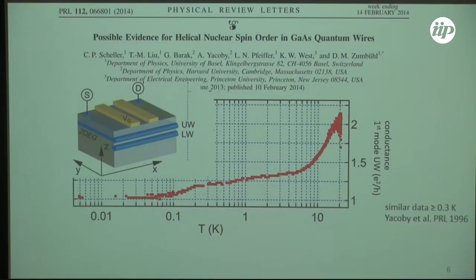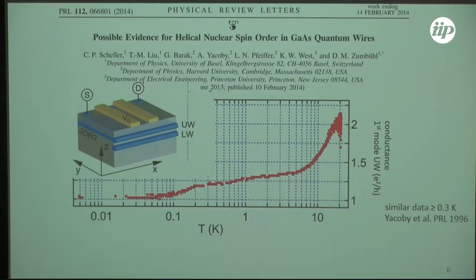About ten years ago we looked at the conductance of a wire which is a few microns long in cleaved edge overgrowth samples, and we found interestingly that at high temperatures — above 10 Kelvin — the conductance is as expected 2e² over h, but as we cool the system down to 100 millikelvin the conductance of the first mode drops and approaches 1e² over h, then doesn't change anymore. Somehow as we lower the temperature this spin degeneracy is lifted and it goes to a one-spin-selective mode.